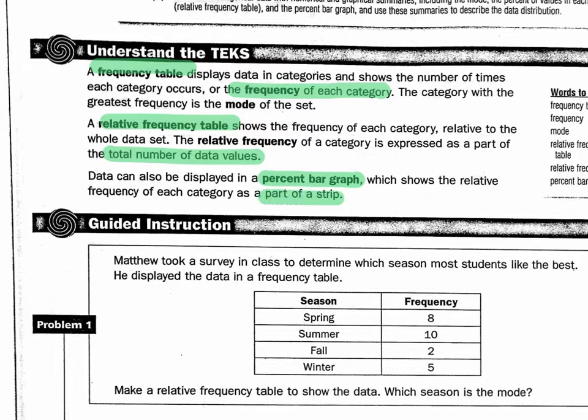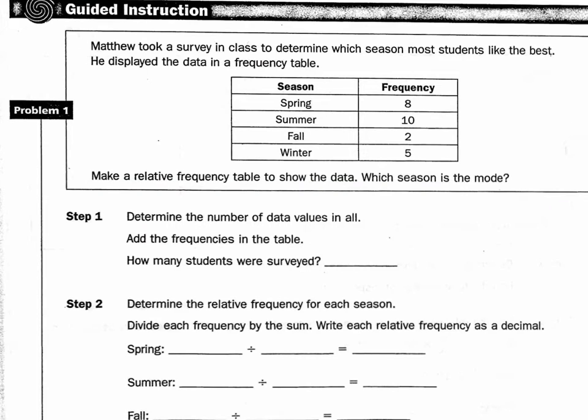I do have to say that this is the one I've seen on a lot of practice STARs, this percent bar graph, and there are some in here. So let's look at this part. Matthew took a survey in class to determine which season most students like the best. He displayed it in a frequency table. Make a relative frequency table to show the data. Which season is the mode?